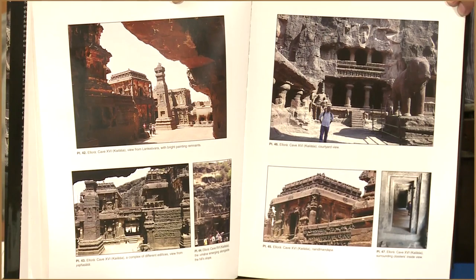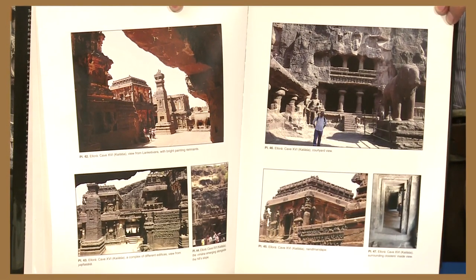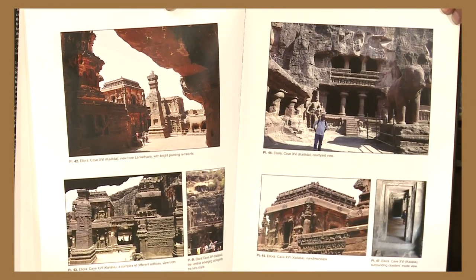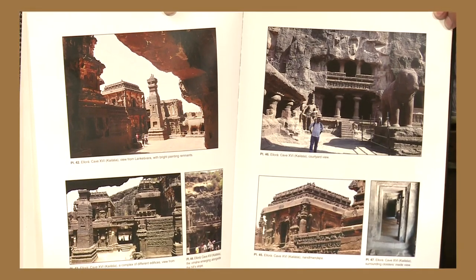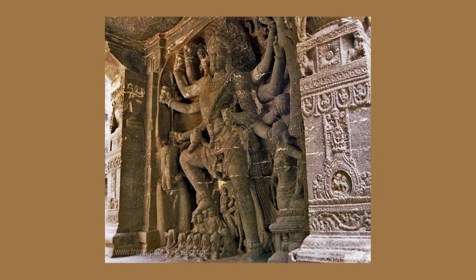Another beautiful rock-cut temple is the Kailasanath Temple at Ellora in Maharashtra. The Rashtrakutas built this beautiful rock-cut structure at Ellora. A hill was carved from the top to bottom to build a two-storied temple known as the Kailasanath Temple of Ellora. The whole structure has been carved out of a hill and given a beautiful shape, with every part of the temple beautifully carved with sculptures. One of the most famous sculptures there is Mahishasuramardini.